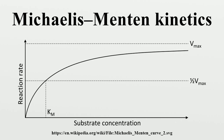The model involves an enzyme E binding to a substrate S to form a complex, which in turn is converted into a product P and the enzyme. This may be represented schematically, where the rate constants are denoted accordingly, and the double arrows between S and the complex represent the fact that enzyme-substrate binding is a reversible process.